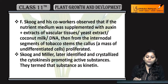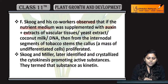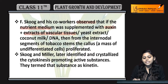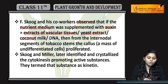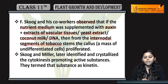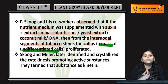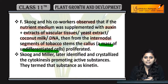Skoog and his co-workers ne observe kiya that nutrient medium ko jab supplement kiya oxins se, extract of vascular tissues, ya phir yeast extract, coconut milk, ya phir DNA se, then inter-nodal segments of tobacco stem ke callous — jo ek mass of undifferentiated cells hota hai — woh proliferate karna start kar deti hai.